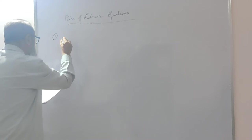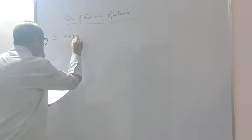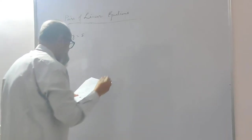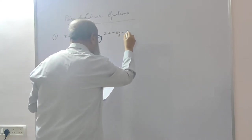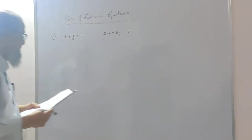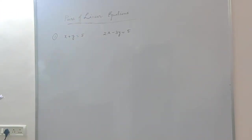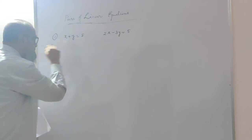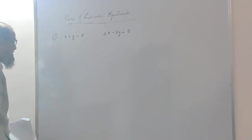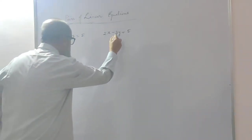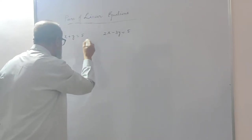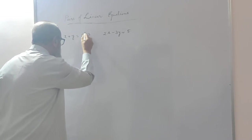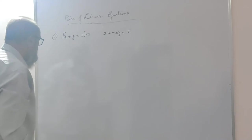The first problem: x plus y is equal to 5, and the other equation is 2x minus 3y is equal to 5. These are the two equations given and we are asked to solve them — find the value of x and y. Here, the coefficient of y is 1 in the first equation and 3 in the second. To make them equal, I have to multiply the first equation by 3. This entire equation is to be multiplied by 3.